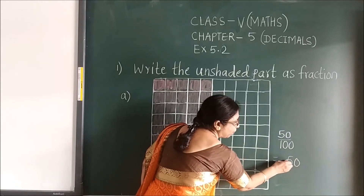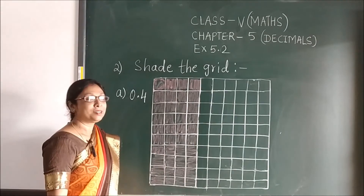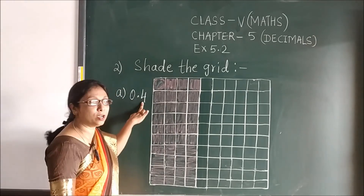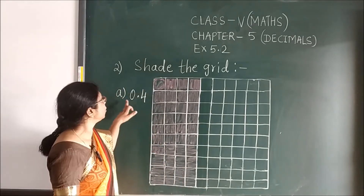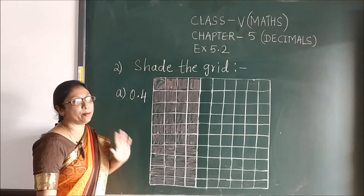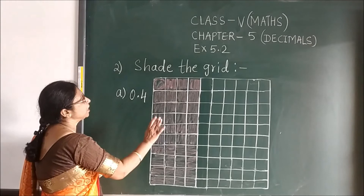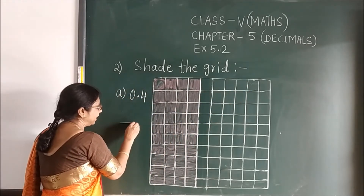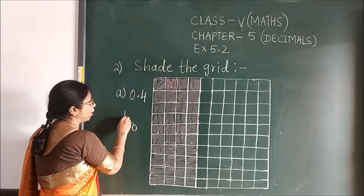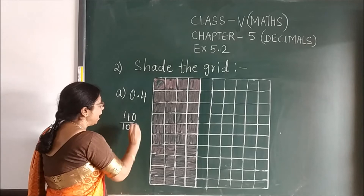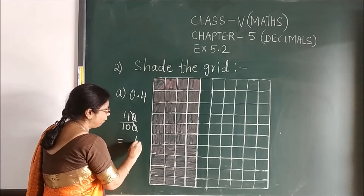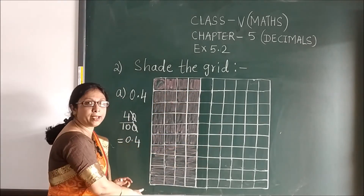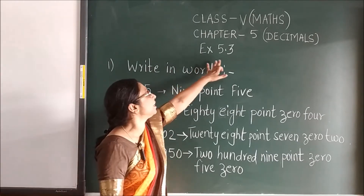So we will write here 50 upon 100. You can write this in decimal form also: two zeros, so after two digits the point will come — you can write it as a decimal. Now the second question: shade 0.4. Draw and shade the part. There are 10 parts total, and 4 parts are the 40 shaded parts, so 0.4. First we drew the squares and then shaded that part.